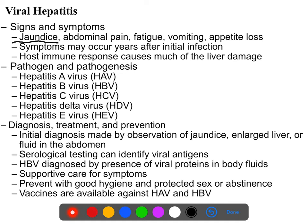The five types of viral hepatitis are conveniently named: A, B, C, Delta, and E. Delta is basically D — I don't know why they didn't name it hepatitis D virus, but Delta is fine.